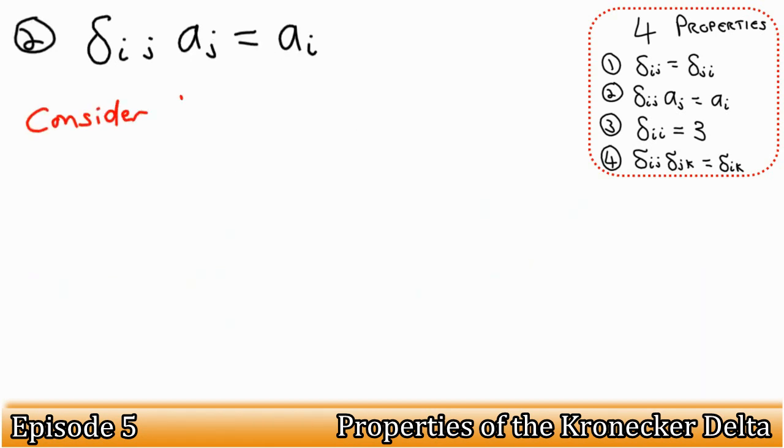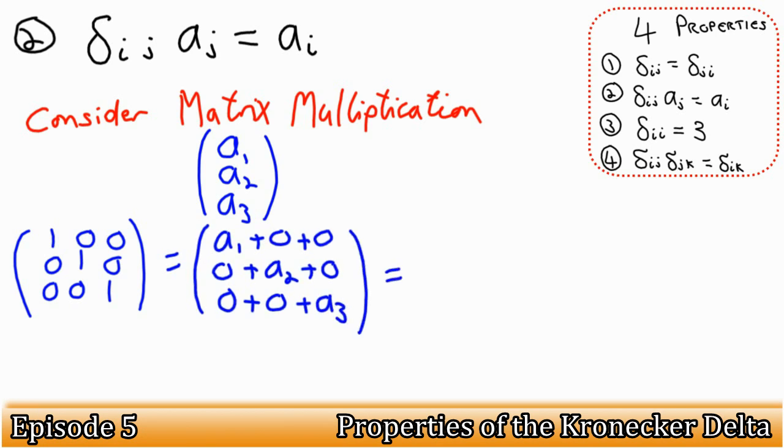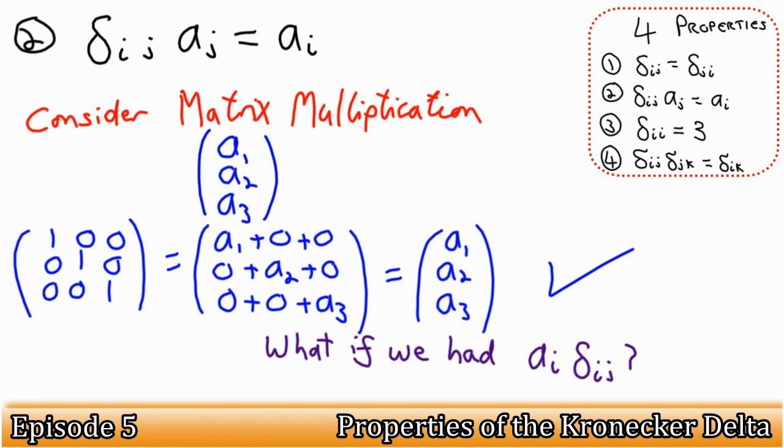For property 2, we show the identity aspect of the Kronecker Delta. We can apply matrix multiplication, as shown, to prove that the vector ai remains the same when multiplied by the Kronecker Delta. Remember, you don't need to know matrix multiplication for this course. Can you think of what would happen if we wrote ai delta ij instead? Why is order important when we have tensors of different orders?